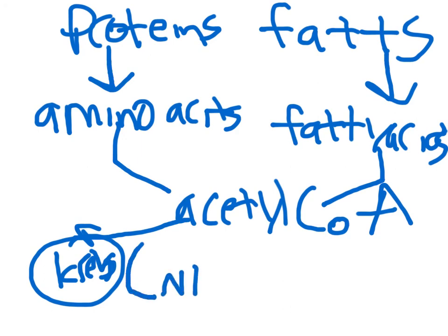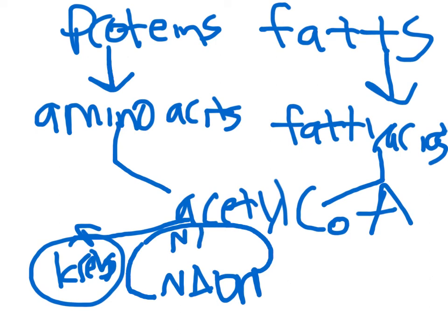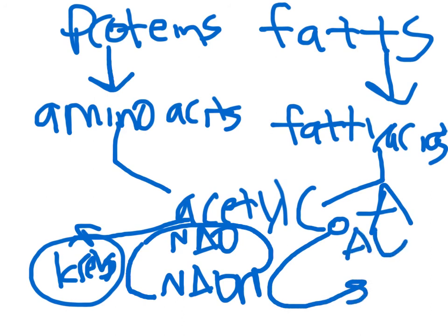NADH is formed from the Krebs cycle, and then through oxidative phosphorylation, we get ATP at the end.